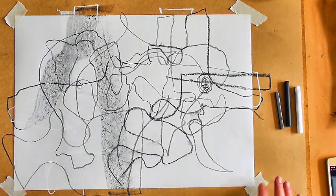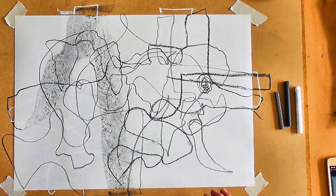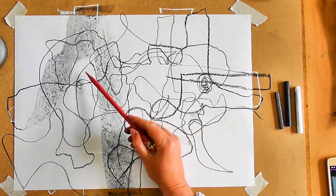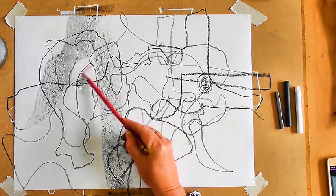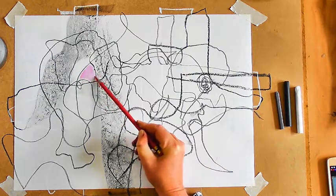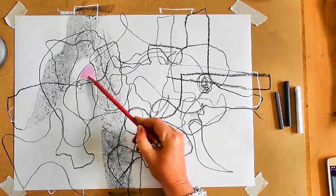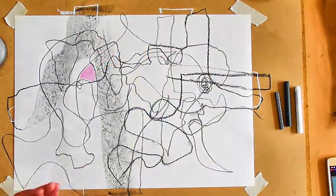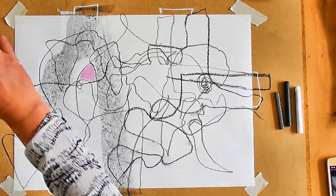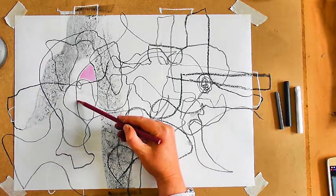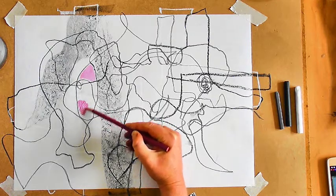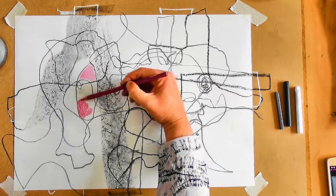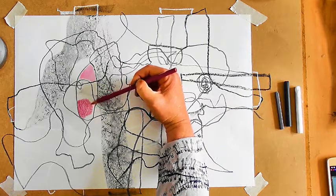Moving on from this, what you might want to do is apply some color. I'm just going to take my colored pencils and work some lightly over. I've picked up a pink here, and I'm just going to have fun coloring in some of these shapes made by the intersecting lines.